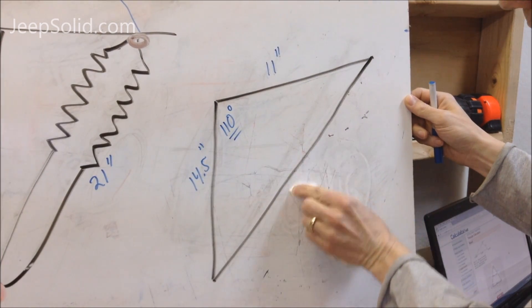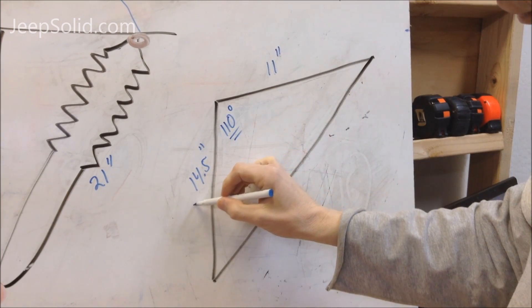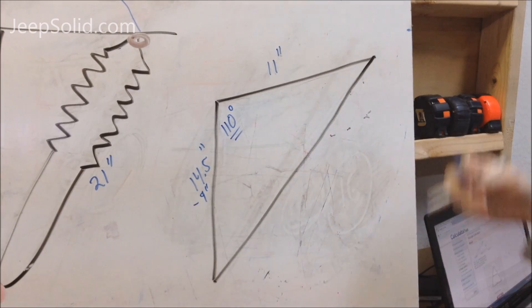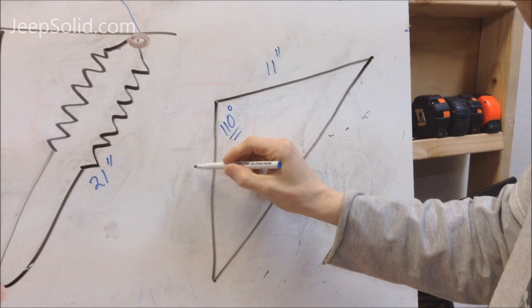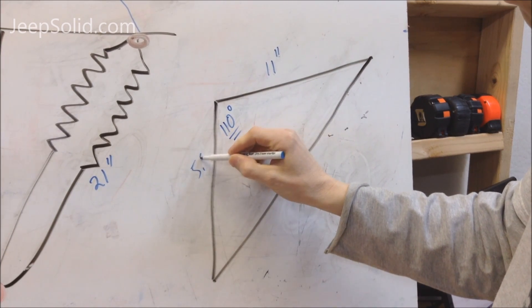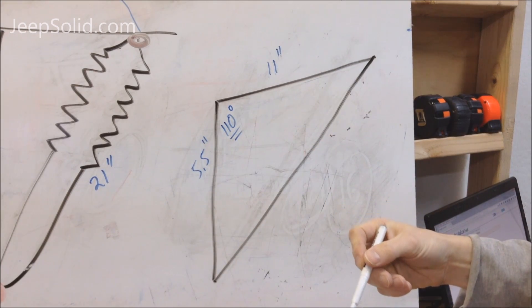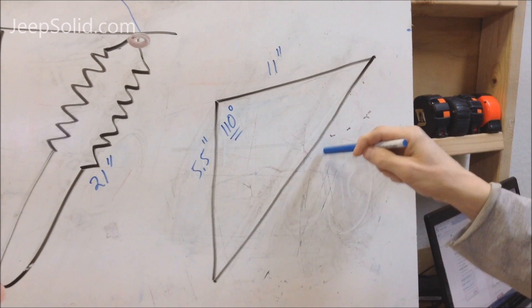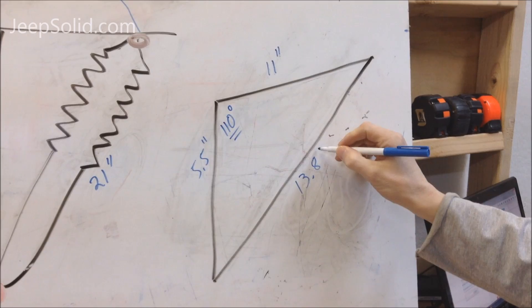we're going to get rid of this 21 inches because that's going to change. We're going to take that 14.5, subtract our 9 inches off of it, which leaves 5.5, so this is going to change to 5.5. Now we can put these three figures back into that calculator on Google and it'll tell us what the length of this side is. And that comes out to be 13.8 inches.